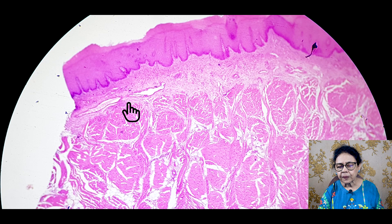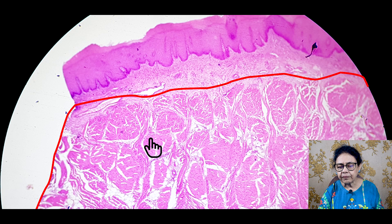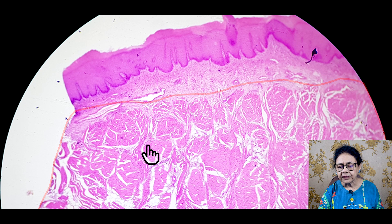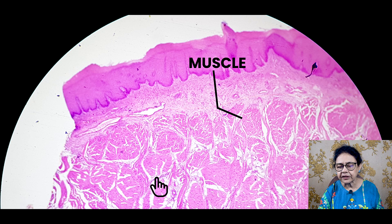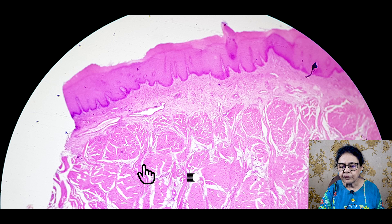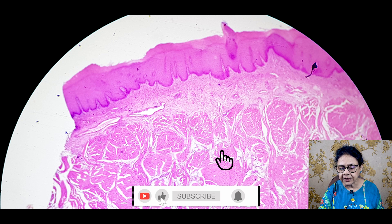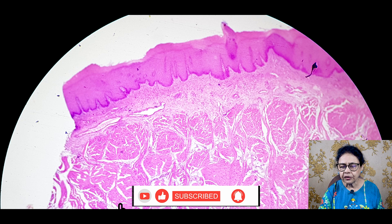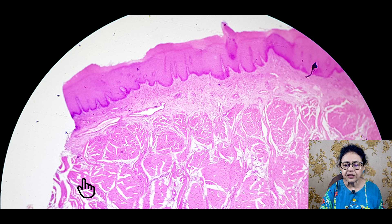Then you will see that there are muscles. You see the muscle layer — they are in different layers, but they are in a haphazard direction. You will see our tongue is a muscular organ. So it is lined by stratified squamous epithelium, and below that you will get muscle. You will see different types of muscle. So you will identify this is the tongue.